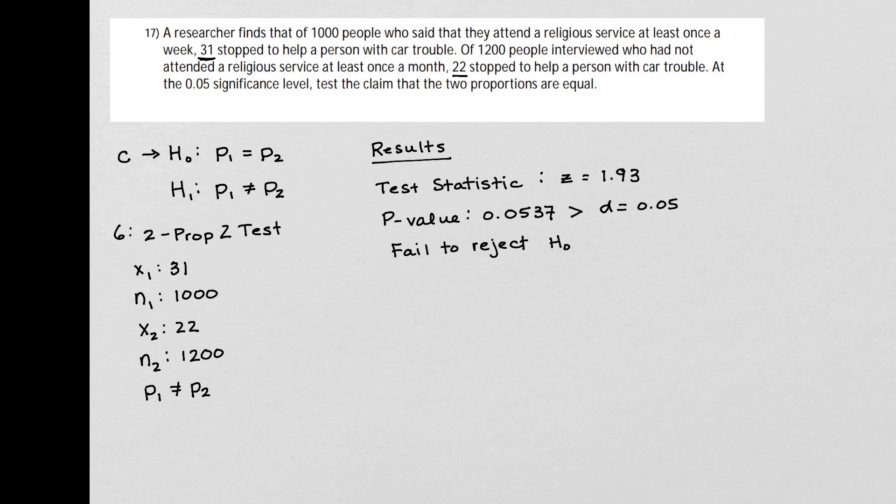So when I write my conclusion, because the claim was the null hypothesis, I use the word reject in my statement. So I'm going to say there is not sufficient evidence to reject, because we said fail to reject the null hypothesis. So there is not sufficient evidence to reject the claim, which was the null hypothesis, that the two proportions are equal.